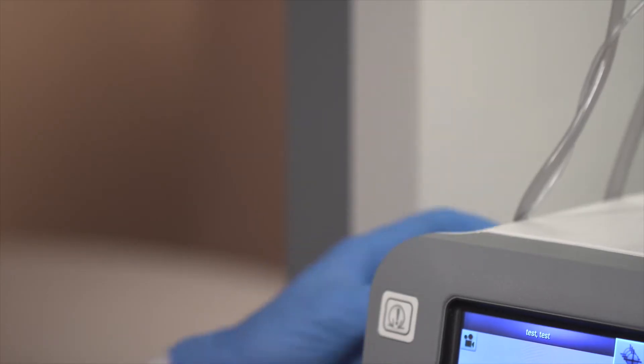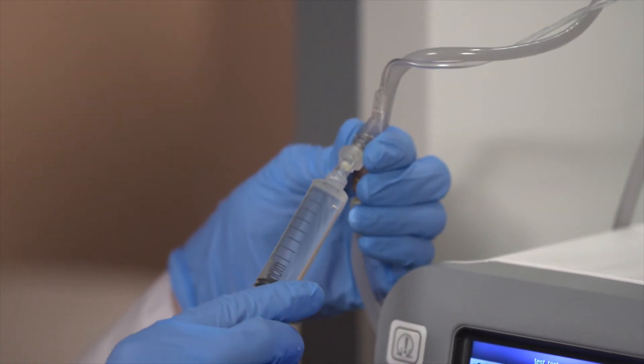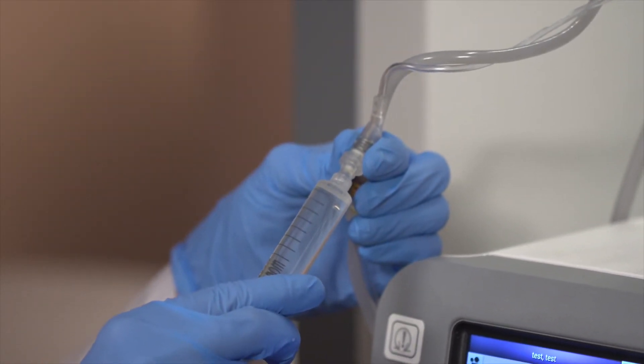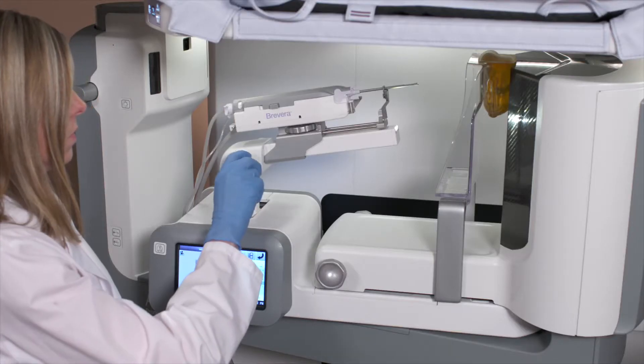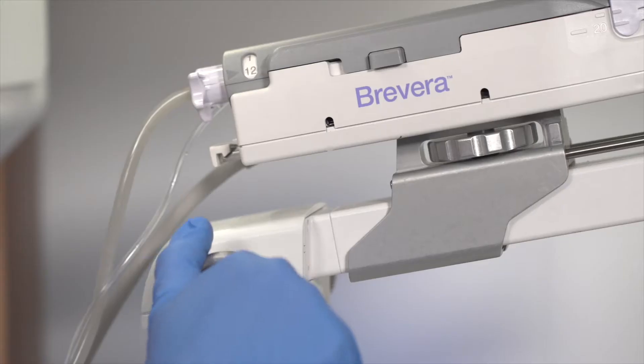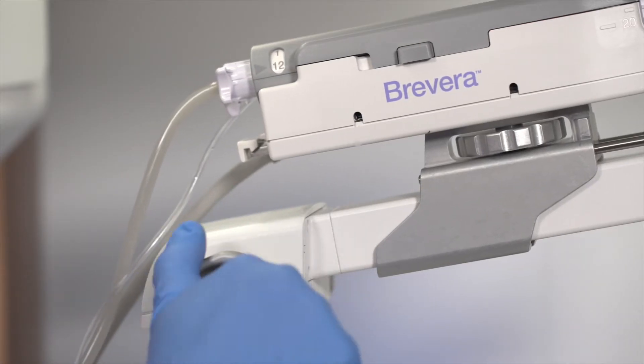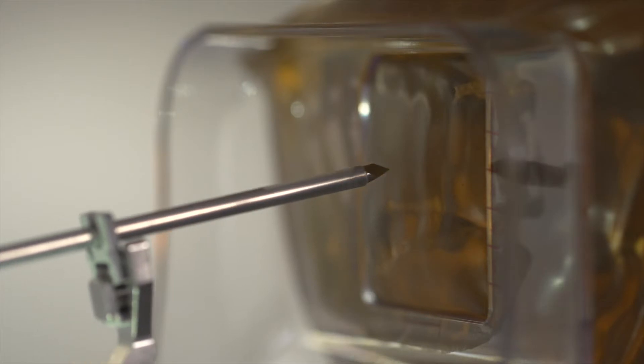If not already done, the physician may place a 10cc syringe of anesthetic on the Y-valve. This is done by simply twisting the lure lock syringe in place. The technologist or physician will clean the skin. Then, the physician will manually advance the tip of the needle close to the skin surface to ensure accurate anesthetic placement.